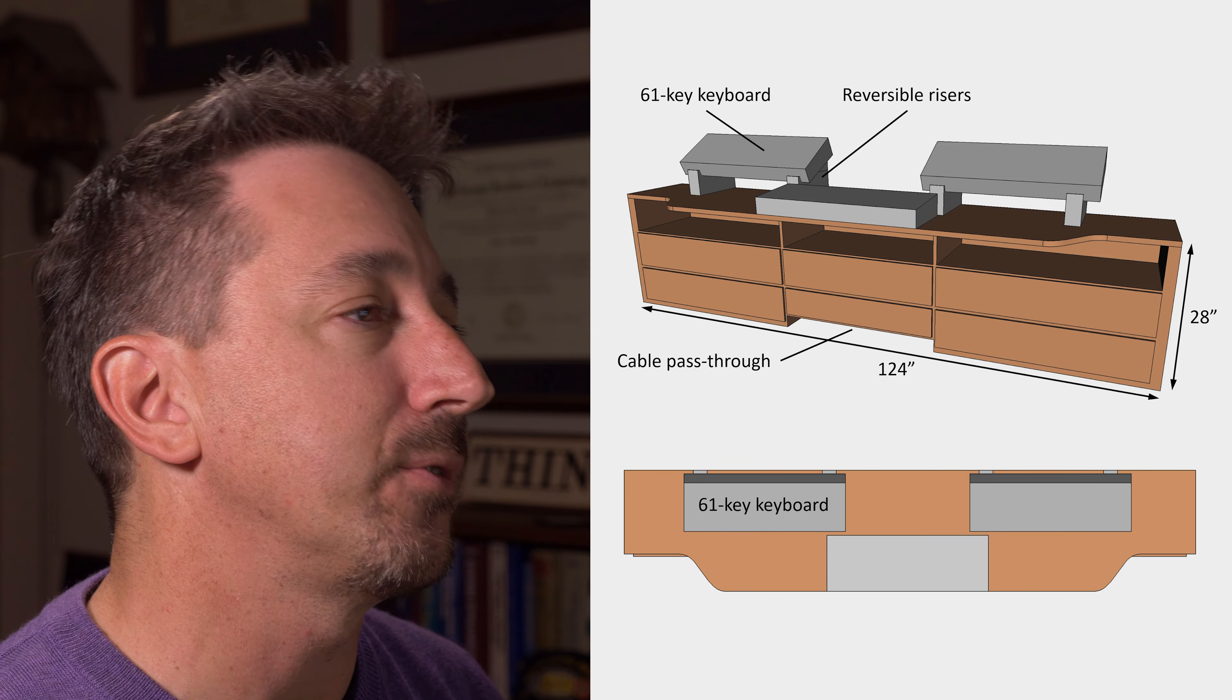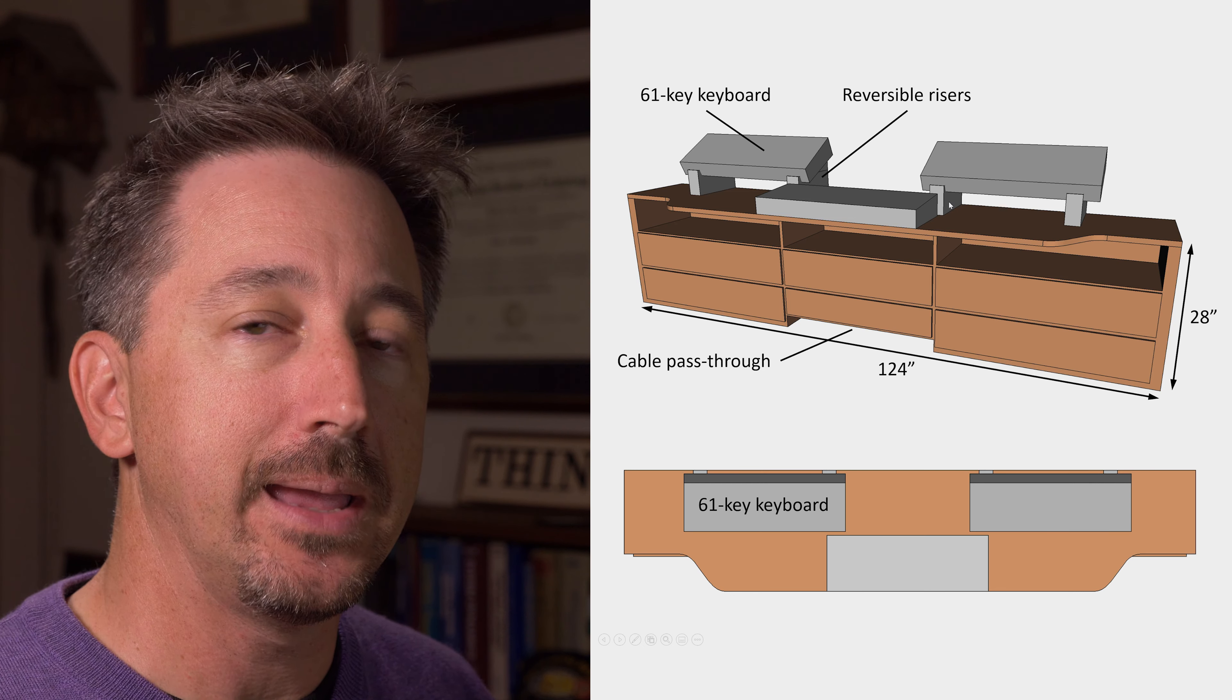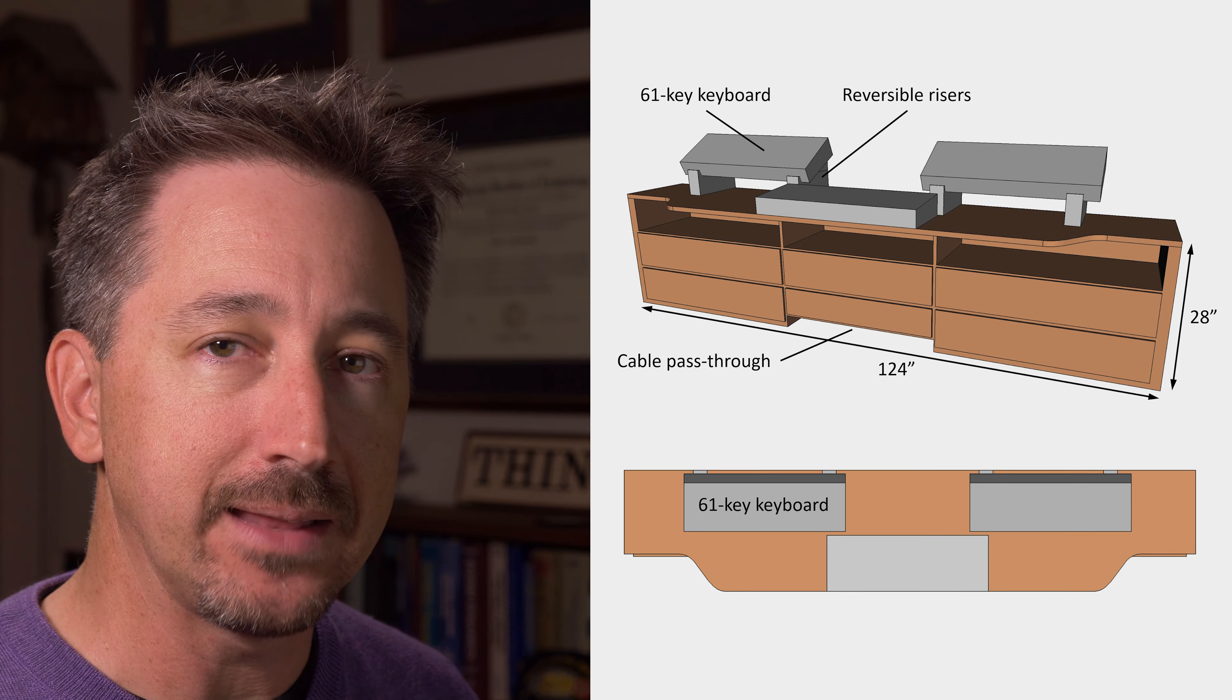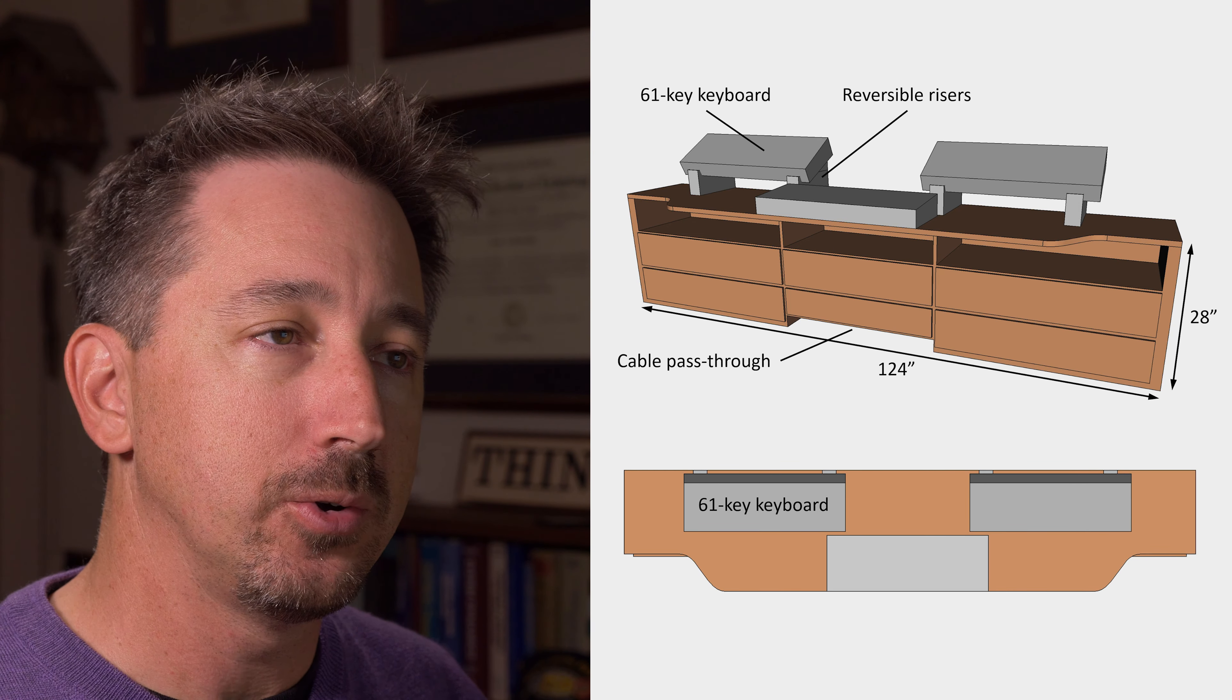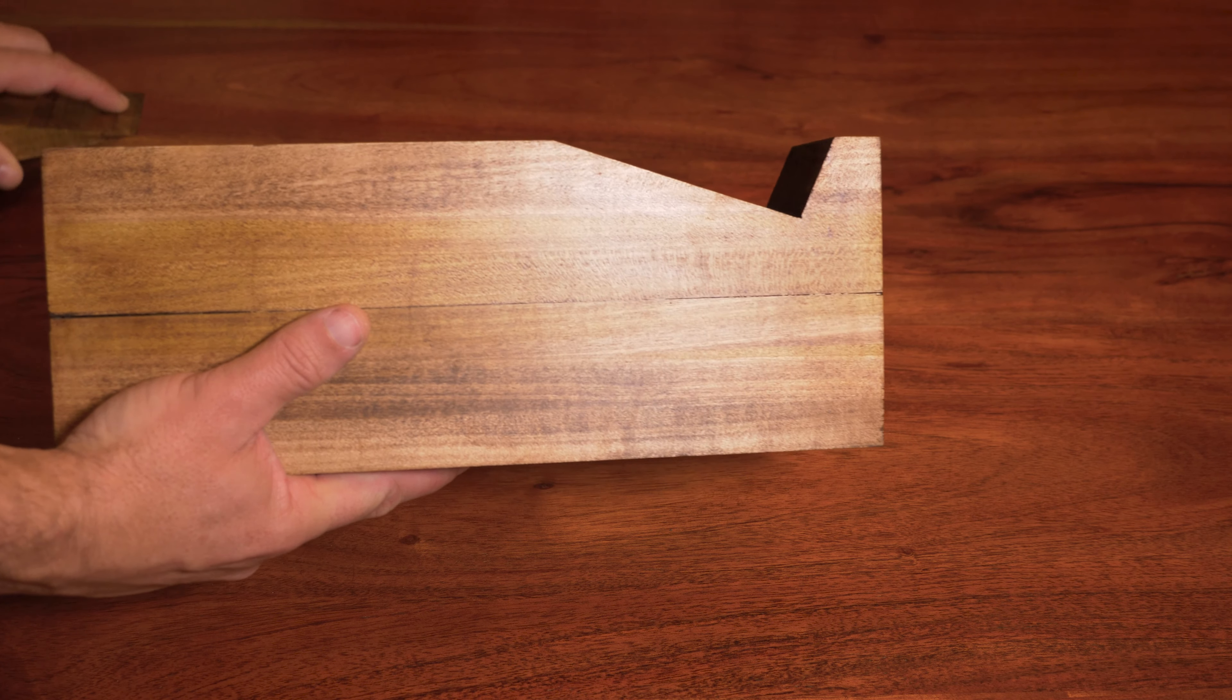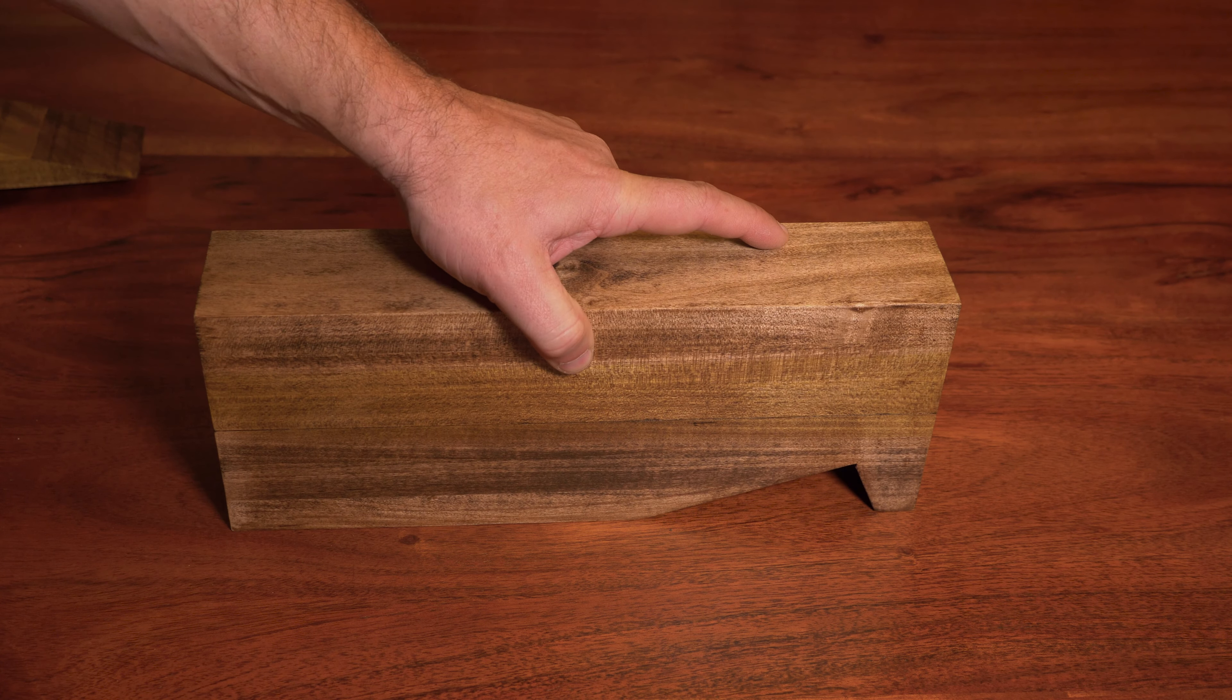The other thing I put together for this setup were these reversible risers right here. What they do is they give you a way to raise the keyboards up and angle them towards you when you're sitting at the desk. What they also do is let you flip them over so that if you want to stand and play, they give you about a six inch rise, which is pretty comfortable if you like to stand and play the keyboard. So they let you flip them over. You can pull off the little wedge part, flip them over and use them for a standing setup as well. And they're made of three inch square poplar that you can get at your favorite home improvement store.